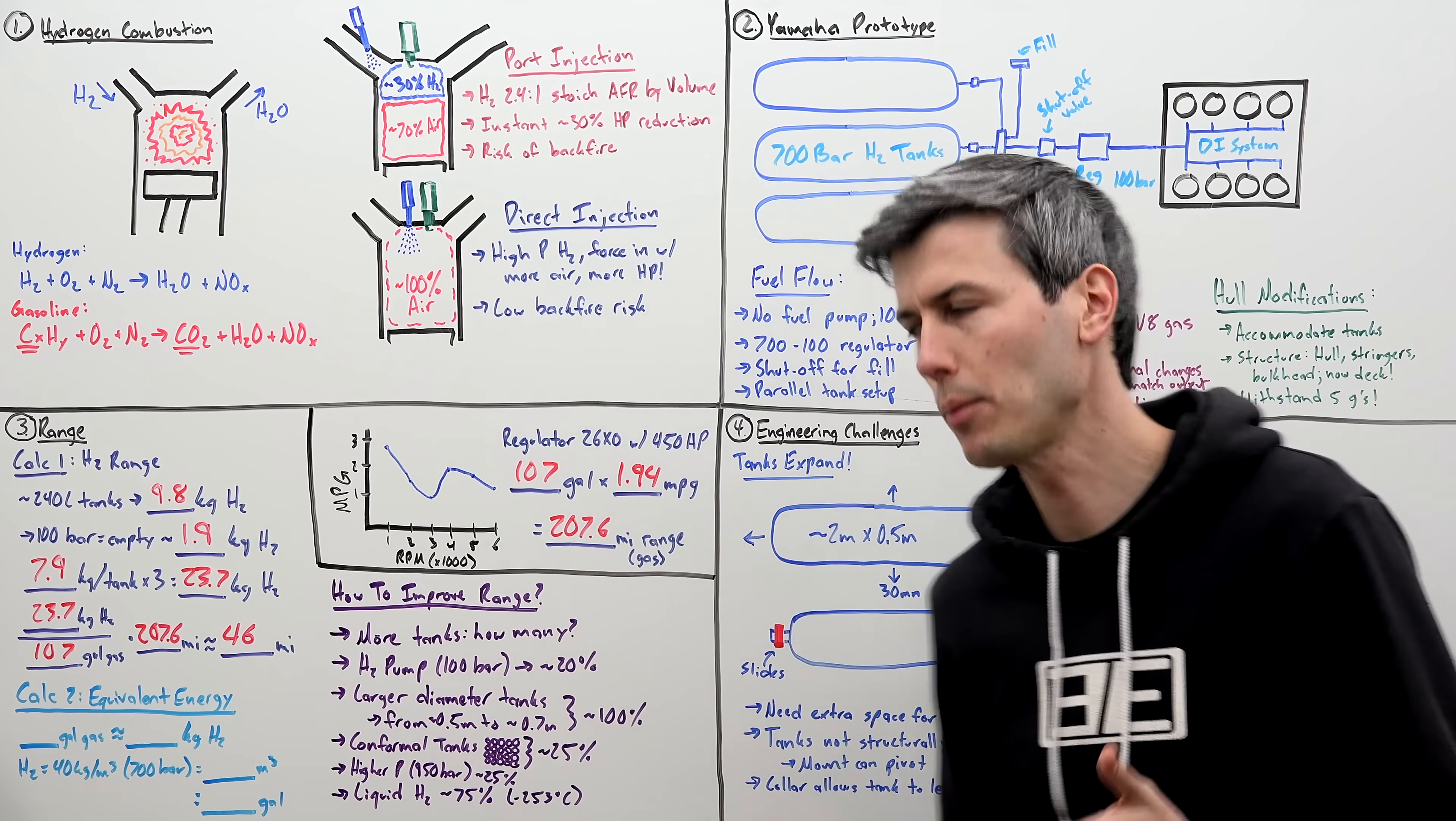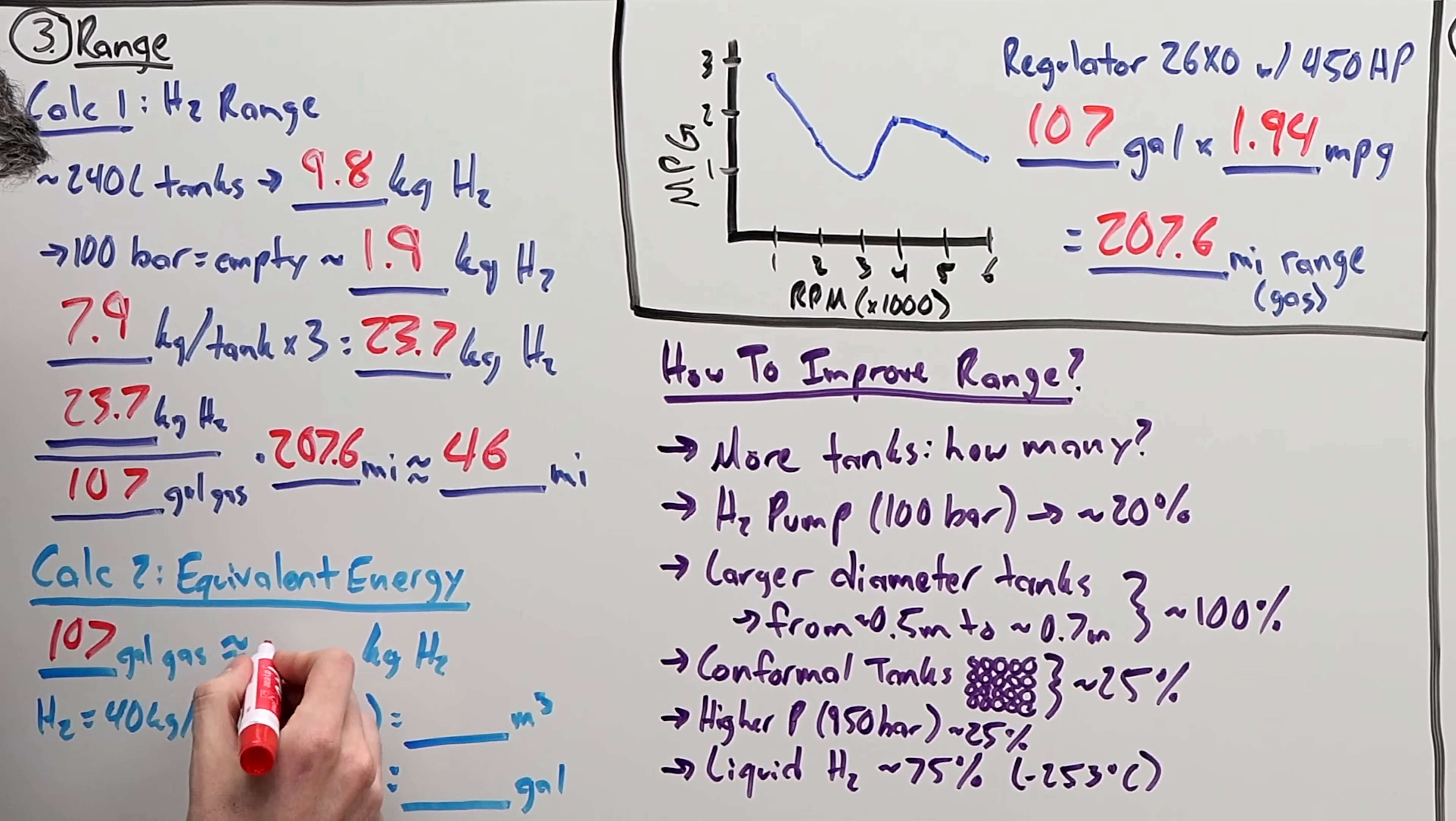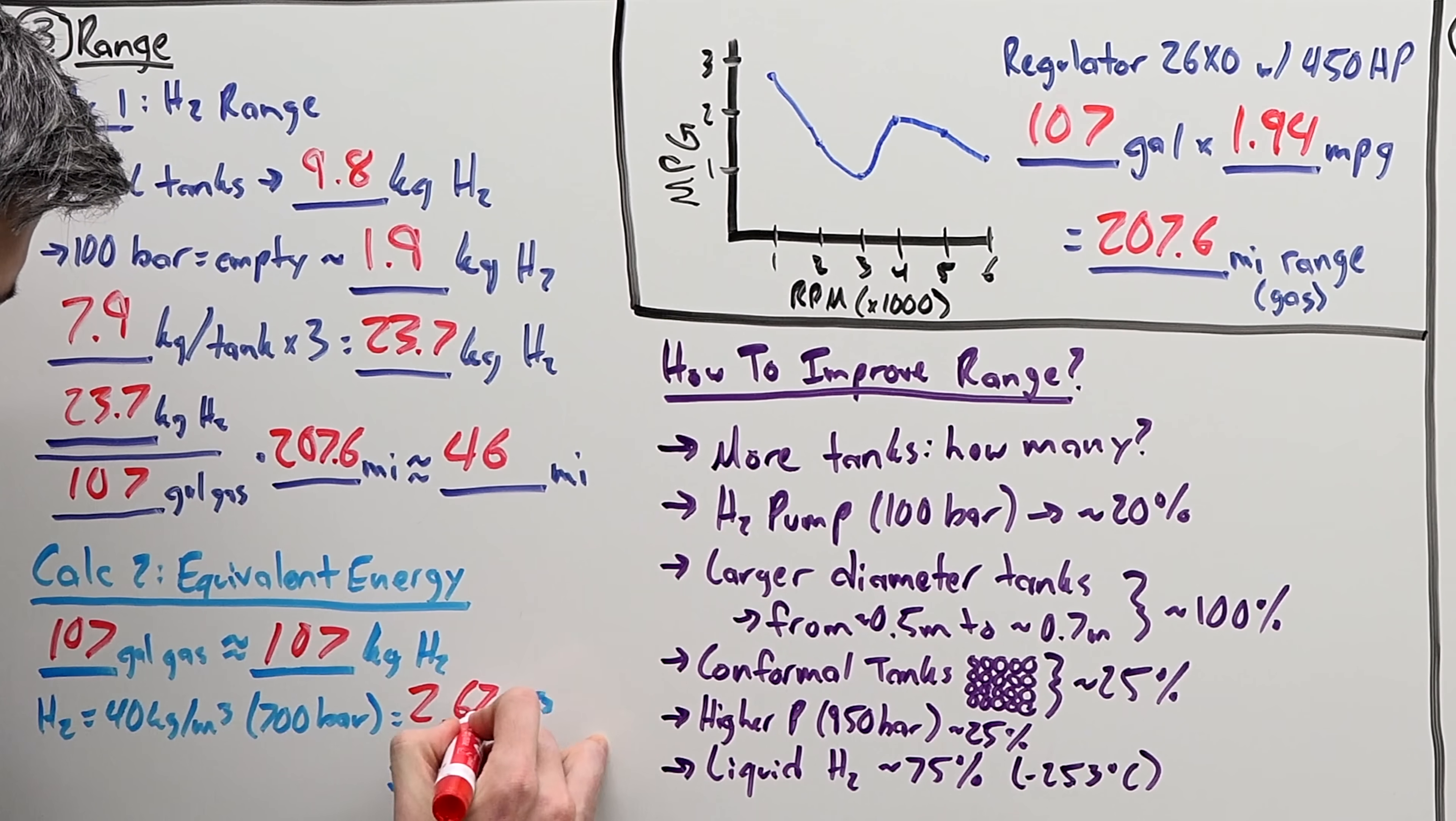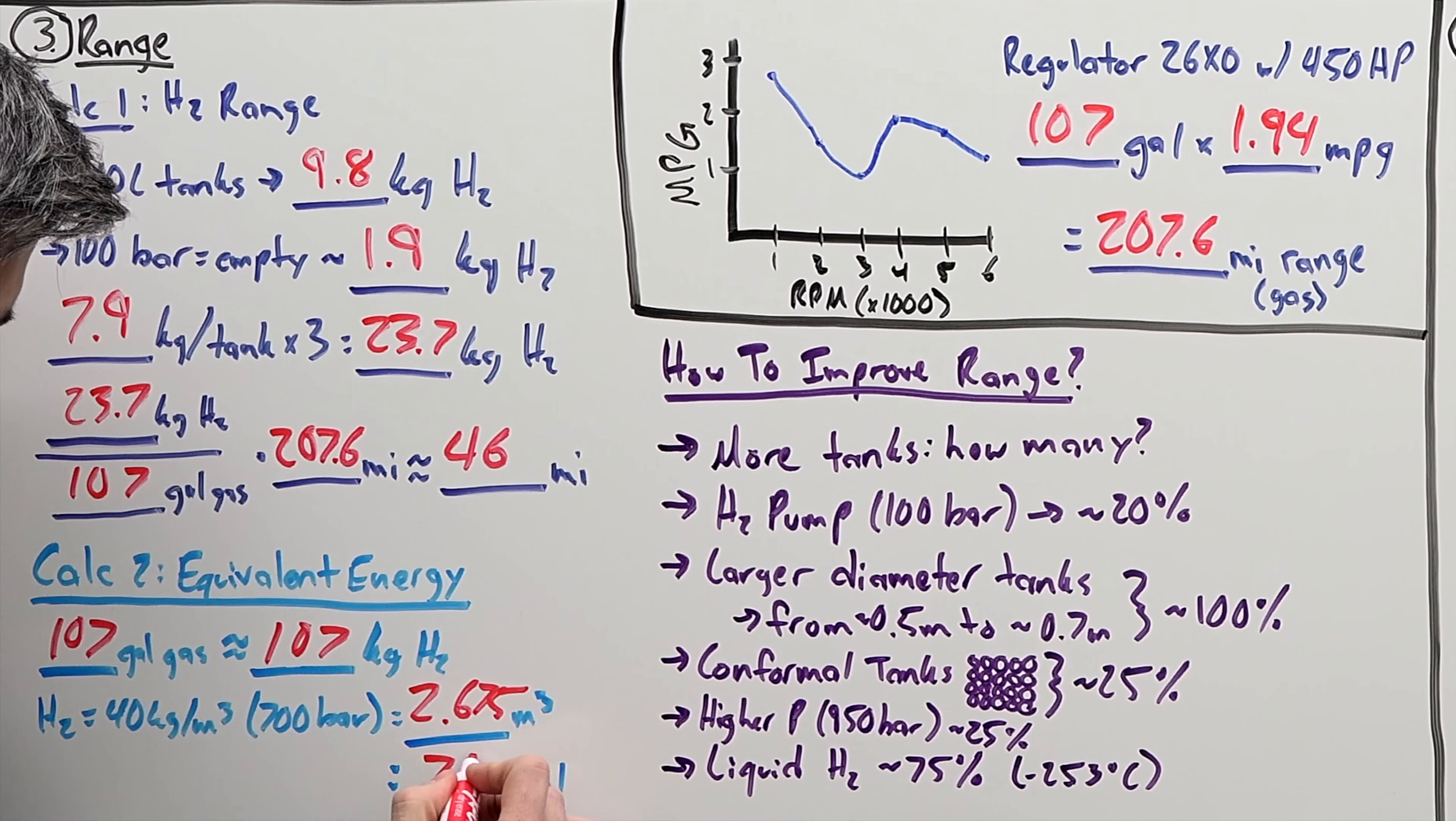Now, again, a kilogram of hydrogen is about the energy equivalent of one gallon of gas. So, if the boat has 107 gallons of gas, well, it's going to need about 107 kilograms of hydrogen to have an energy equivalency. Now, hydrogen stored at 700 bar has a density of about 40 kilograms per meter cubed, meaning you're going to need 2.675 meters cubed of hydrogen stored at 700 bar in order to get 107 kilograms of hydrogen or about a 707 gallon fuel tank.